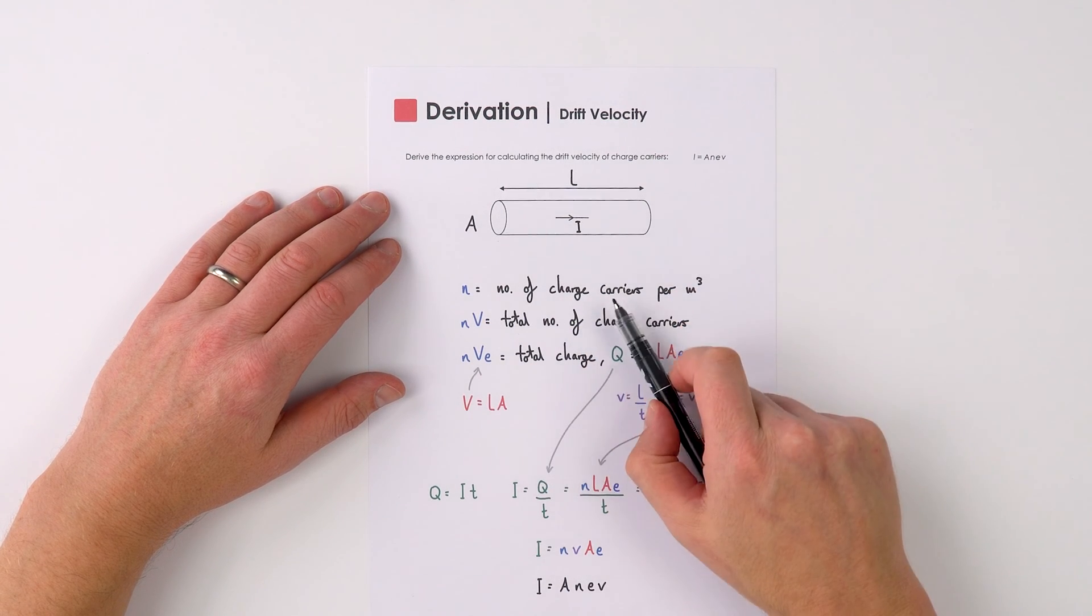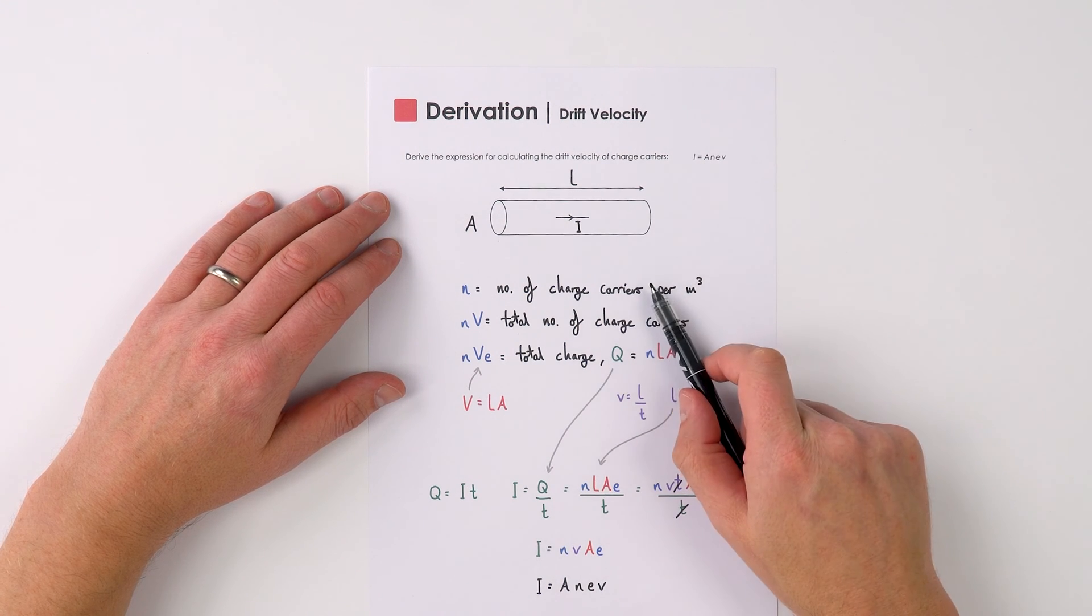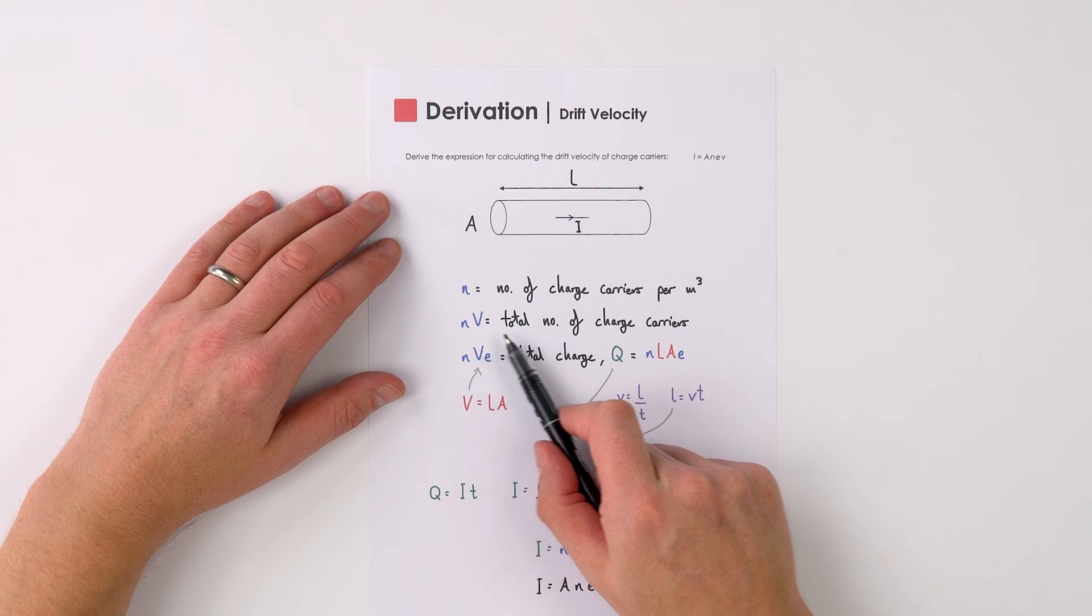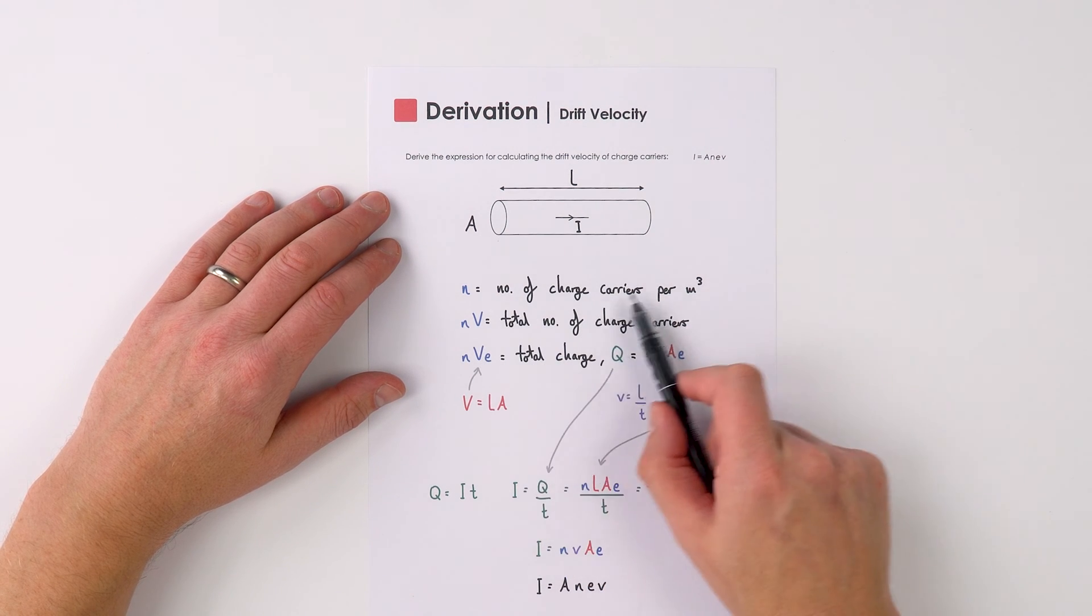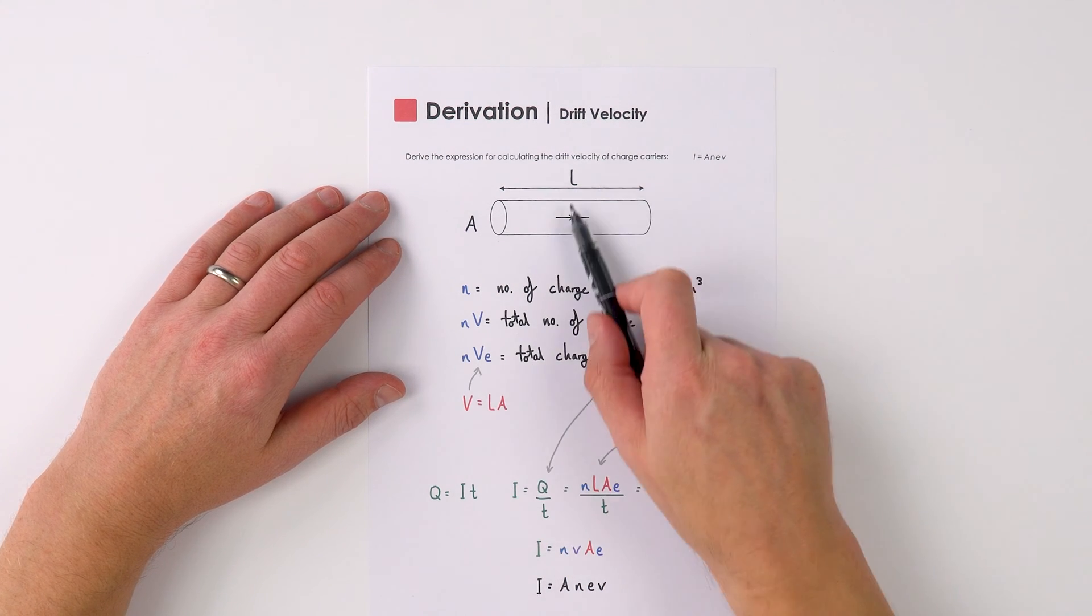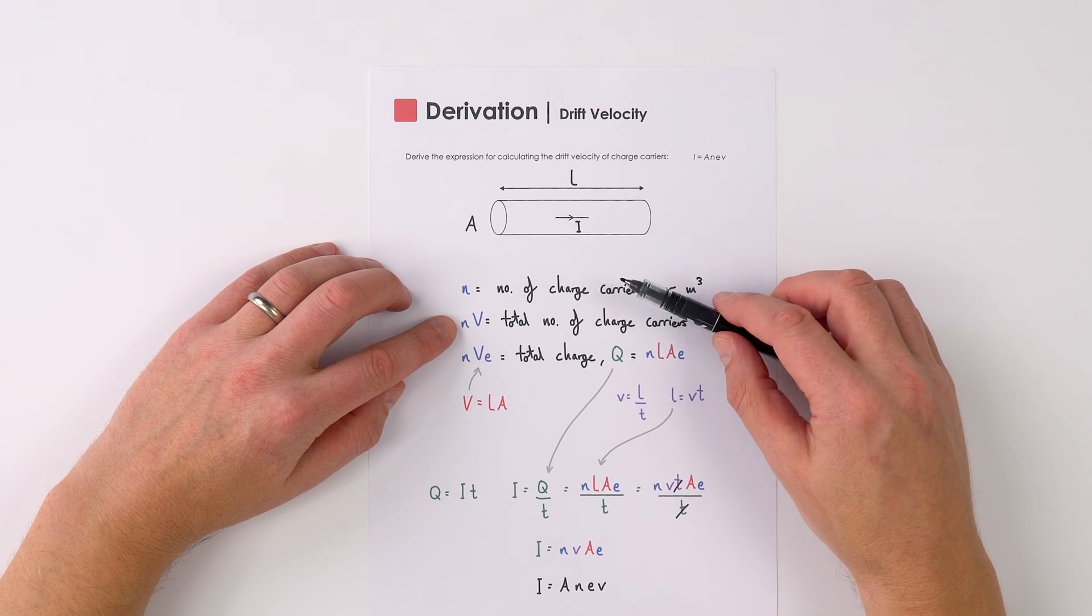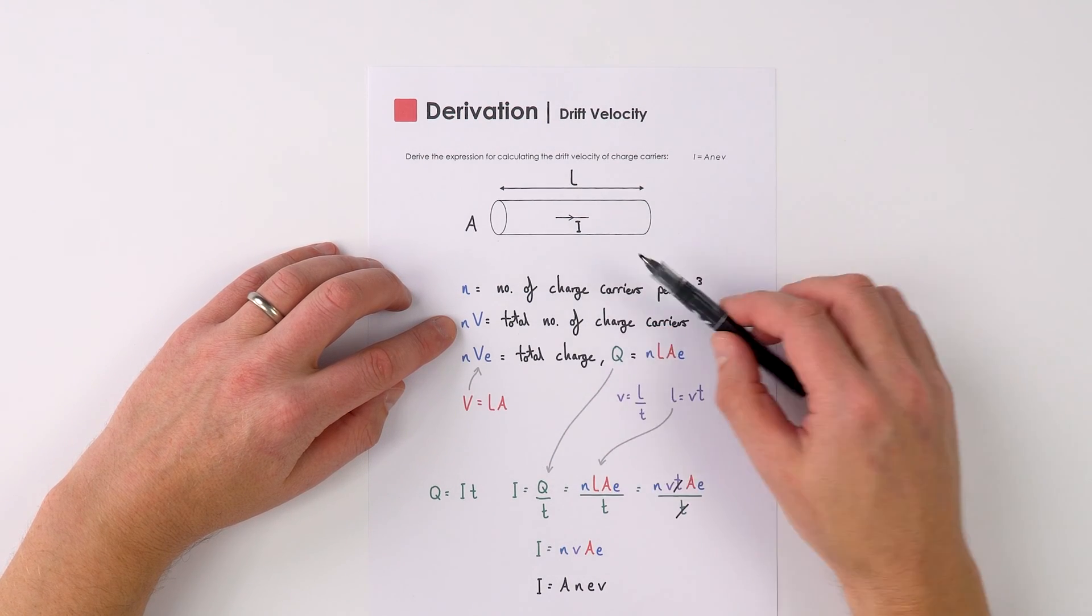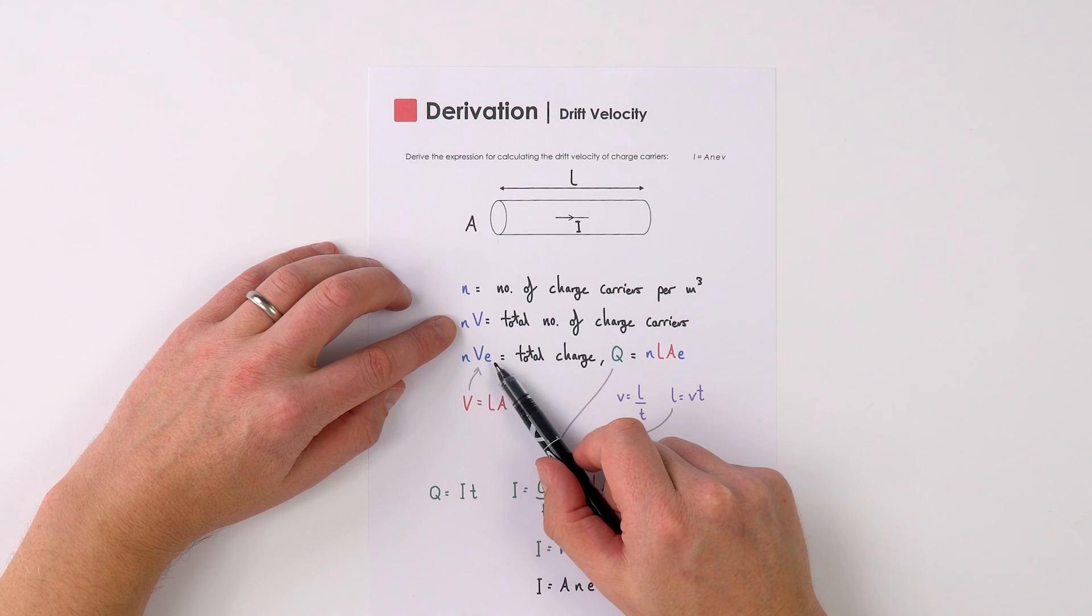N is the number of charged carriers per cubic metre, so the number of charged carriers in this bit of wire is going to be equal to N V. The total number of charged carriers is the charge carriers per cubic metre multiplied by the volume, and if we know that each charge carrier has a charge E on it, the total charge in this piece of wire is going to be equal to N V E.